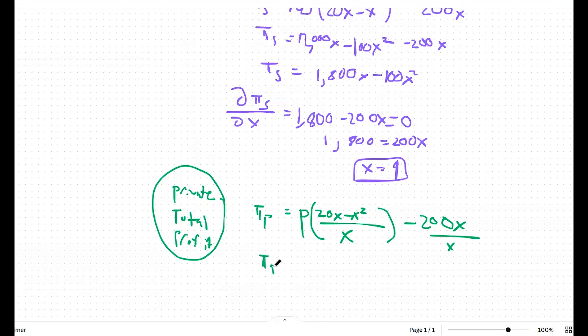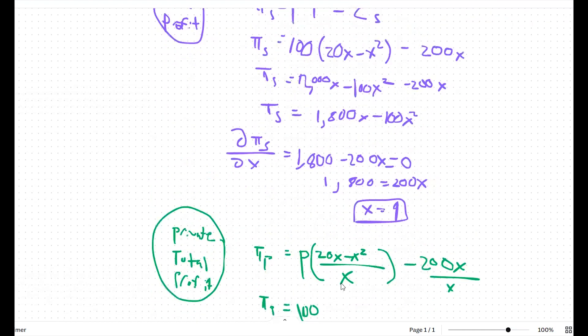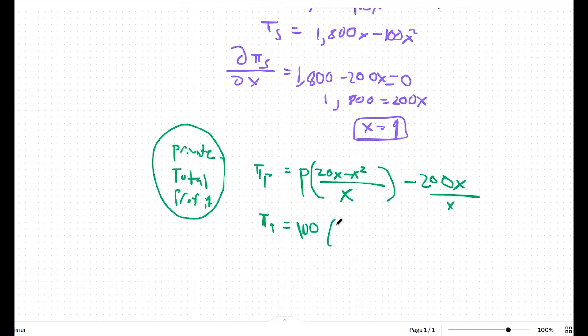So these x's will cancel out and we're just left with one entry fee of 200 or a per person fee. So our private profit is then equal to P, or 100 in this case, times 20x divided by x, which is just 20, and x squared divided by x, which is just x. So 100 times 20 minus x, and then minus 200.